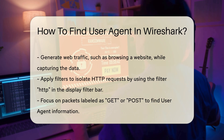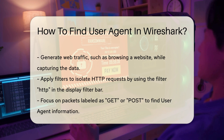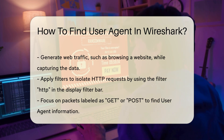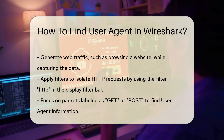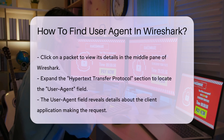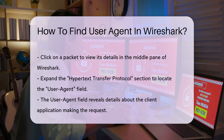Next, look for packets labeled as GET or POST. These packets usually contain the user agent information in their headers. Click on a packet to view its details in the middle pane of Wireshark.